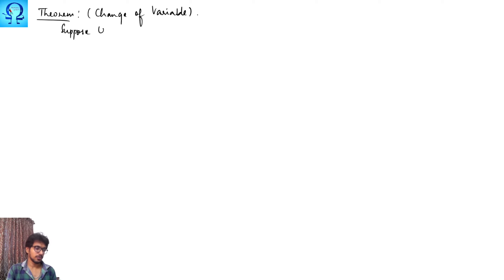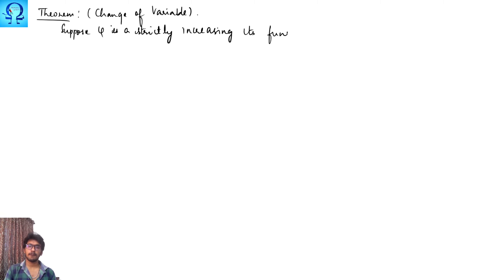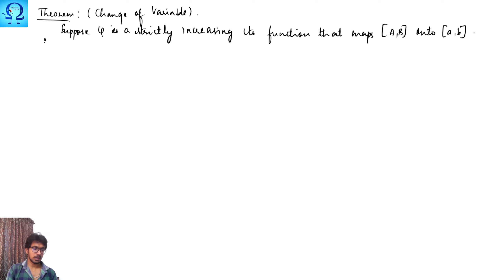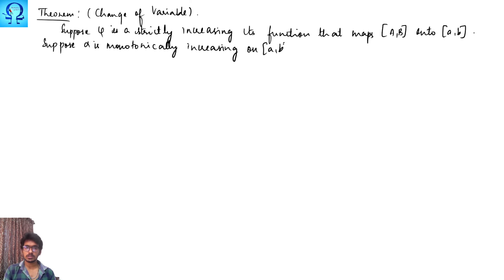This theorem states that suppose phi is a strictly increasing continuous function that maps the interval [a, b] onto [A, B], and let us further suppose alpha is monotonically increasing on the closed interval [a, b].